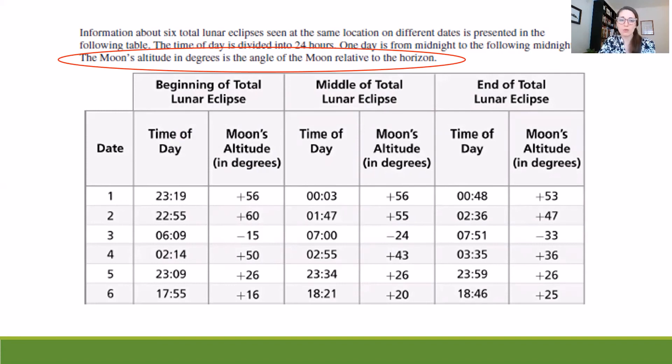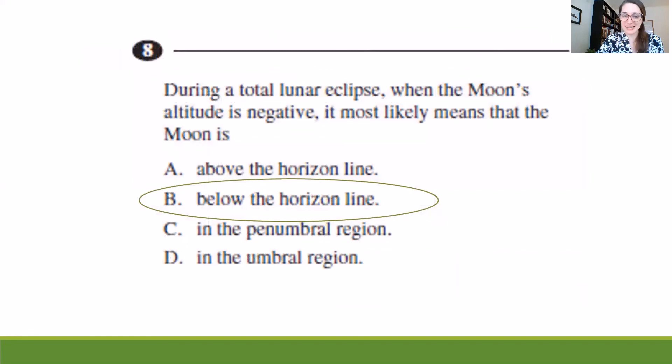So if I'm thinking about the horizon and the angle of the moon in terms of the horizon, I could think of it kind of like I think of a graph. I would guess that anything above the horizon would be a positive and anything below the horizon would be a negative. Knowing what I know from this table and from the information provided before the table, I'm going to say that the negative most likely means that the moon is then below the horizon line.